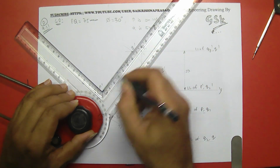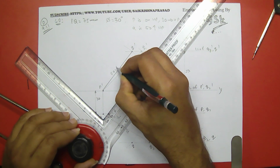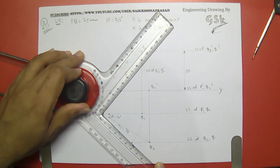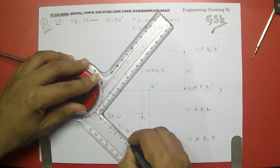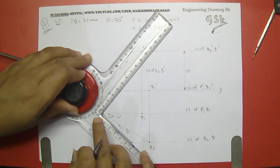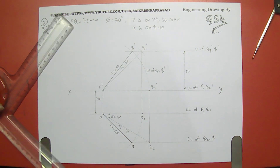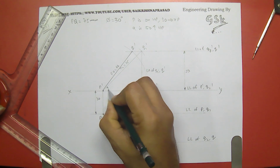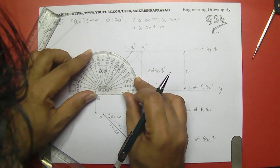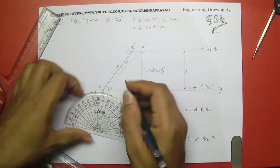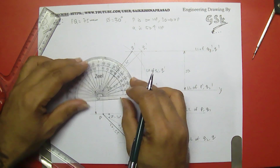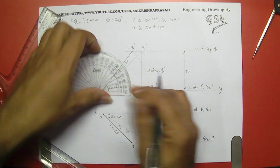The front view length P-dash Q-dash is 66mm. Moving to the top view, PQ is 55mm. Next we find the angles: θ is 43 degrees and α is 50 degrees.